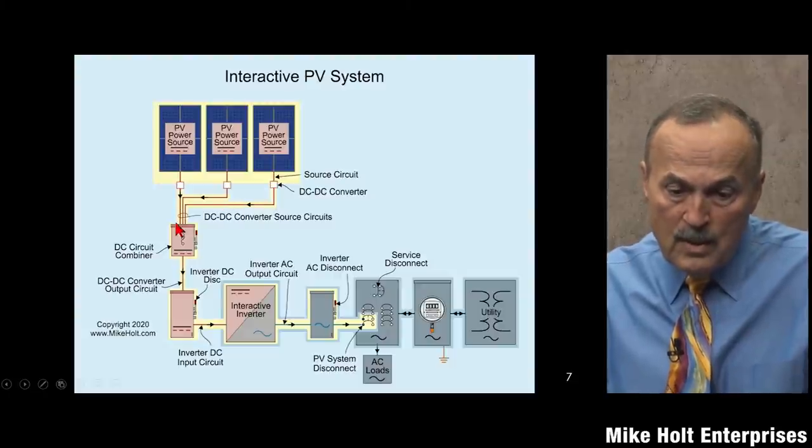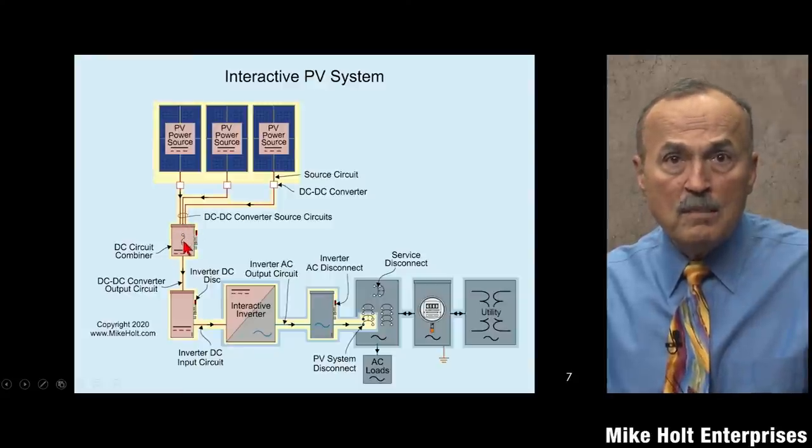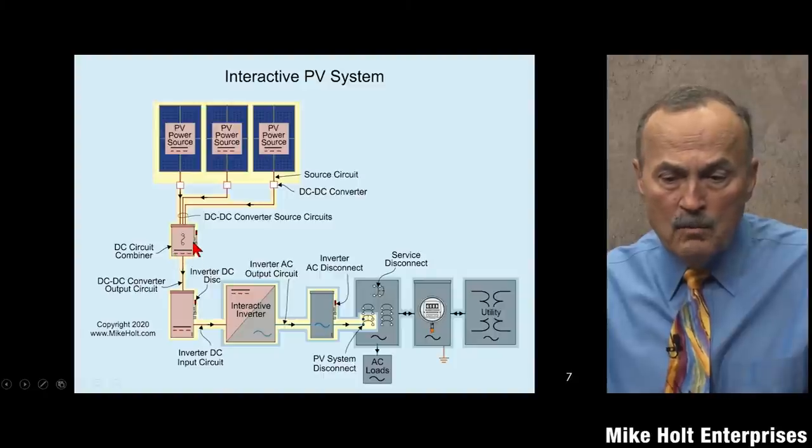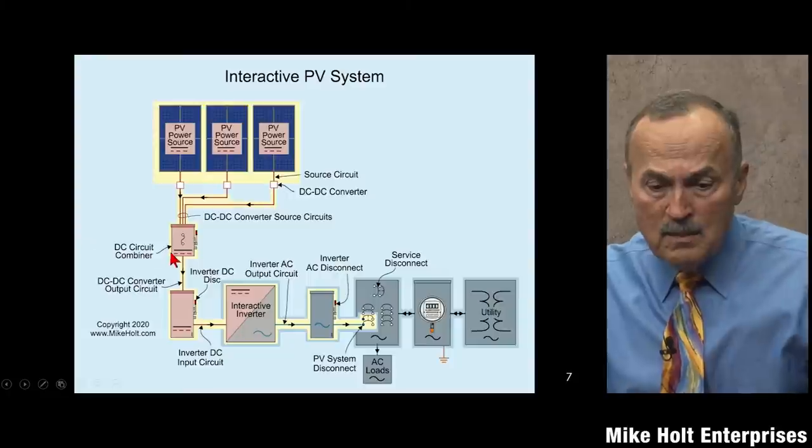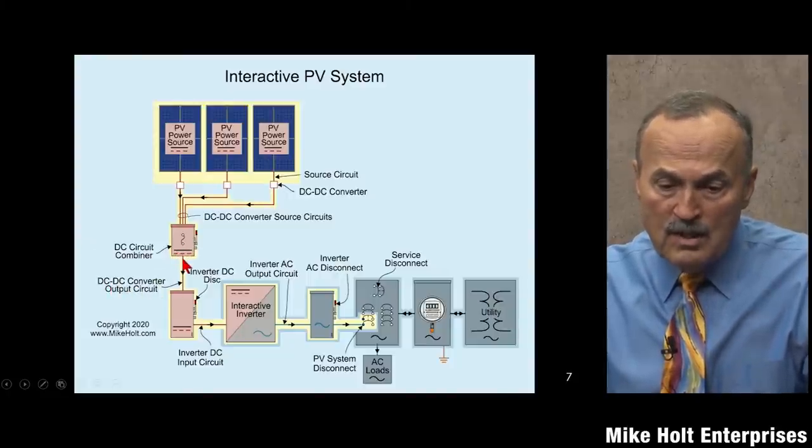You bring multiple circuits together into a combiner. Instead of running all those wires back to the inverter separately, you put them in a box and combine them. So six circuits of two wires each go into the combiner, and then you just run two conductors - bigger, because it carries the combined power - but it's much easier than running six separate circuits all the way back.